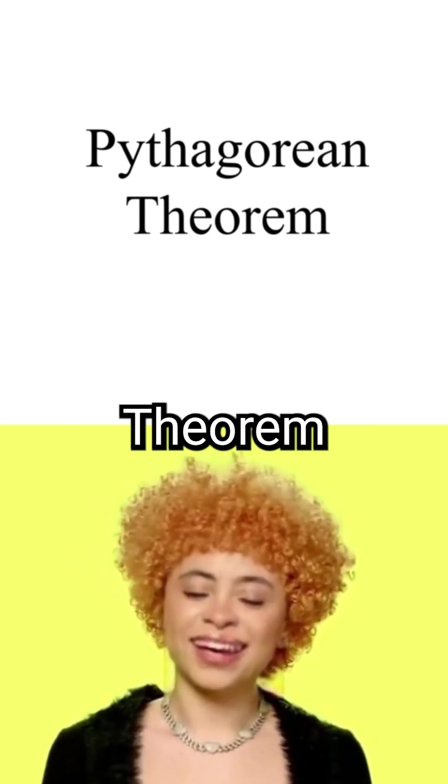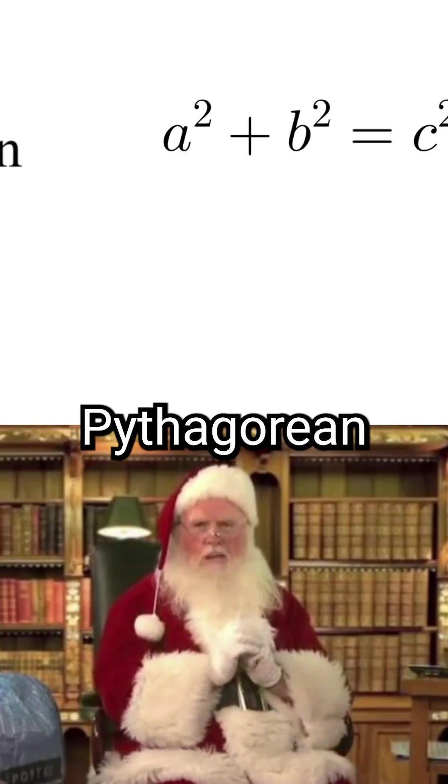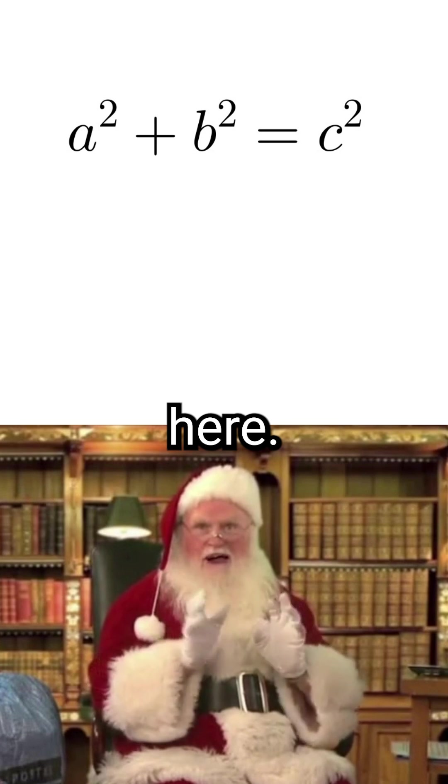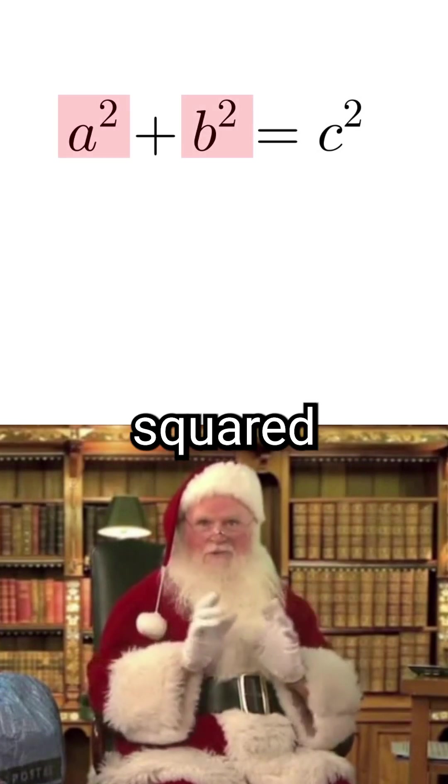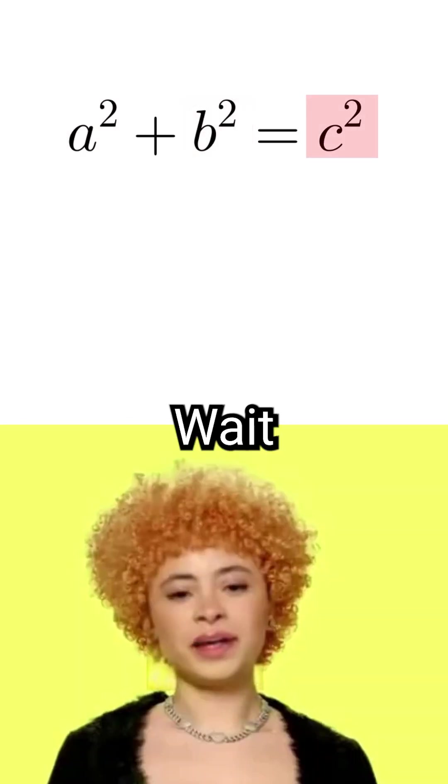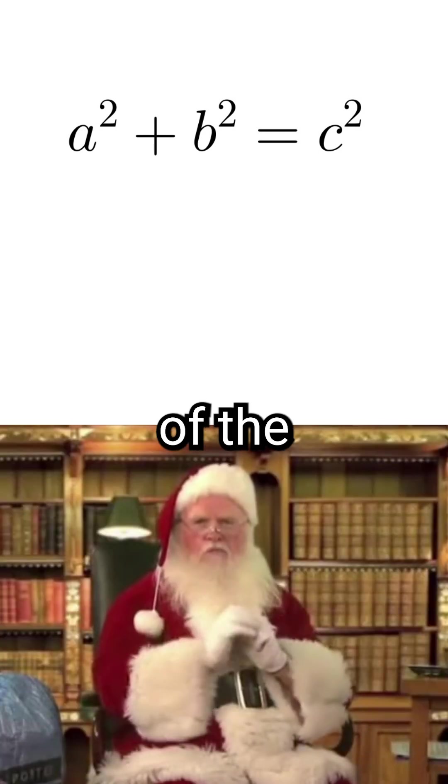Santa Claus, can you tell me what the Pythagorean theorem is? The Pythagorean theorem is just this formula right here: a squared plus b squared equals c squared. So Santa, why is this formula even useful?